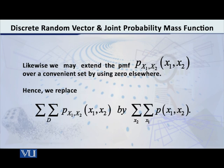then, rather than writing capital D under the summation sign, we simply write summation over the variable X1, and then summation over the variable X2, of P of X1, X2. So this is the concept of the joint probability mass function in the case of two random variables taken together.